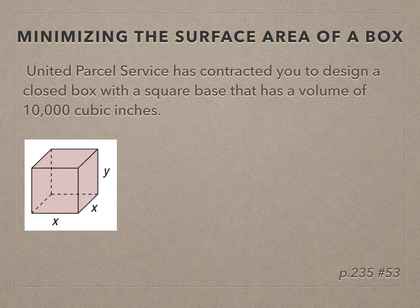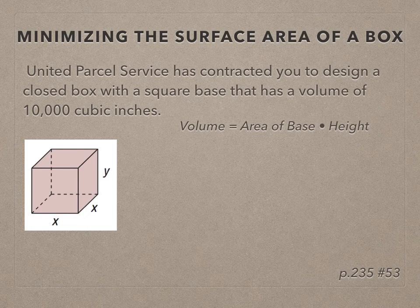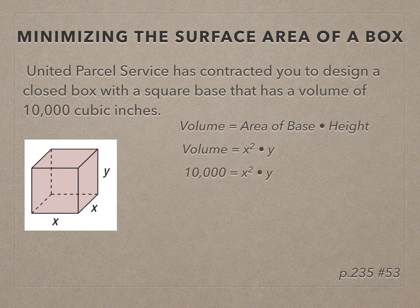Before we go further let's remember the volume of a rectangular prism or any straight prism is the area of the base times the height. The area of this square base is x squared times the height of y. I can substitute in my 10,000 for my volume and this is an equation that came directly from the context of the problem.